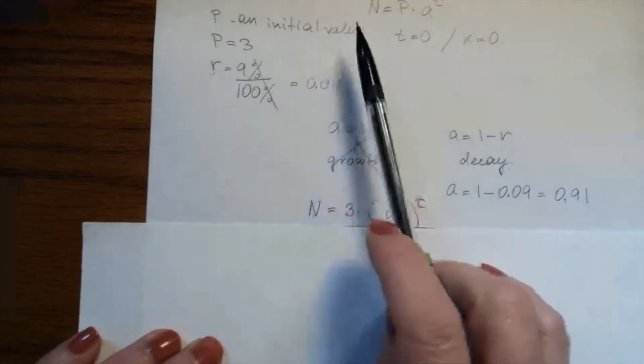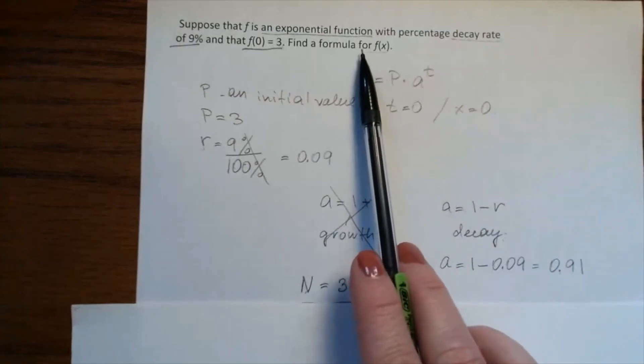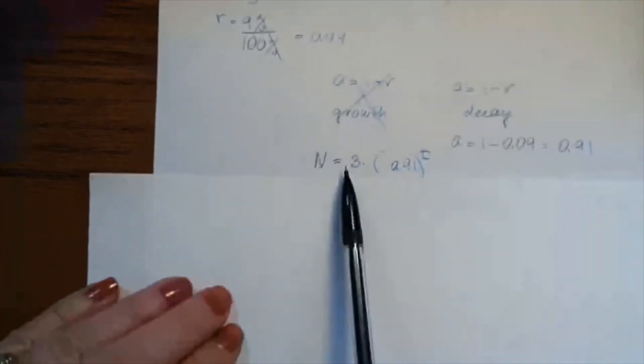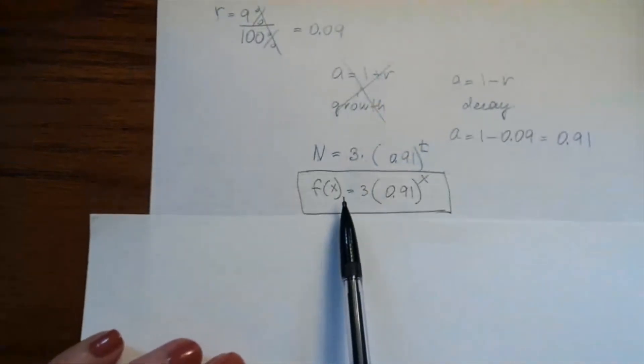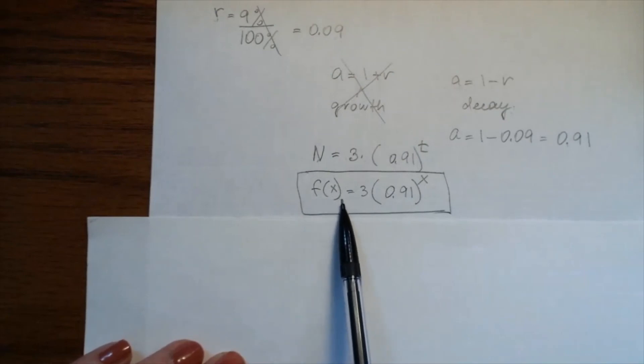Now recall what we were asked: find the formula for f(x). Rewrite the formula in terms of f(x): f(x) = 3 × (0.91)^x. This is the final answer.